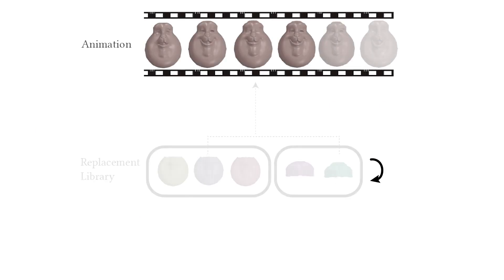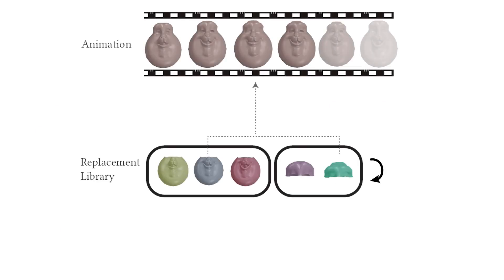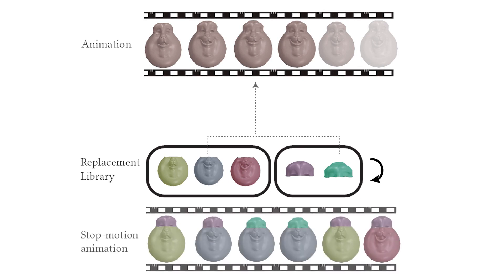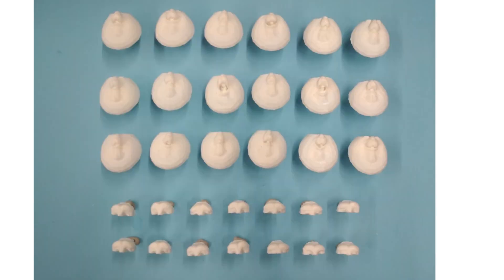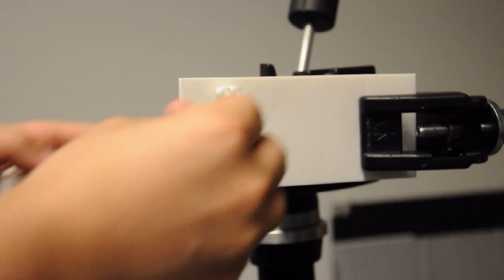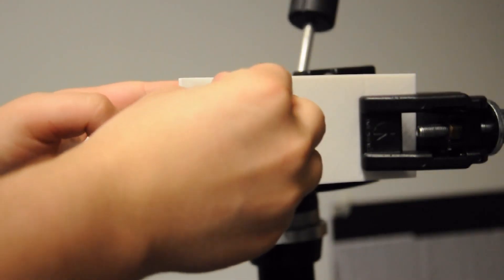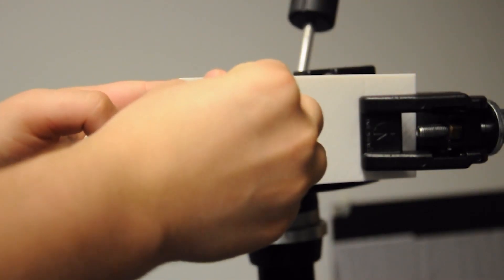We then find the set of replacements for a part by iteratively interleaving selection of the replacement set and mapping the input animation frames to the current replacement set using a graph cut approach. Once the set of replacement parts have been found, we 3D print them and instrument them with plugs so the object parts can be quickly and sturdily assembled together or detached.